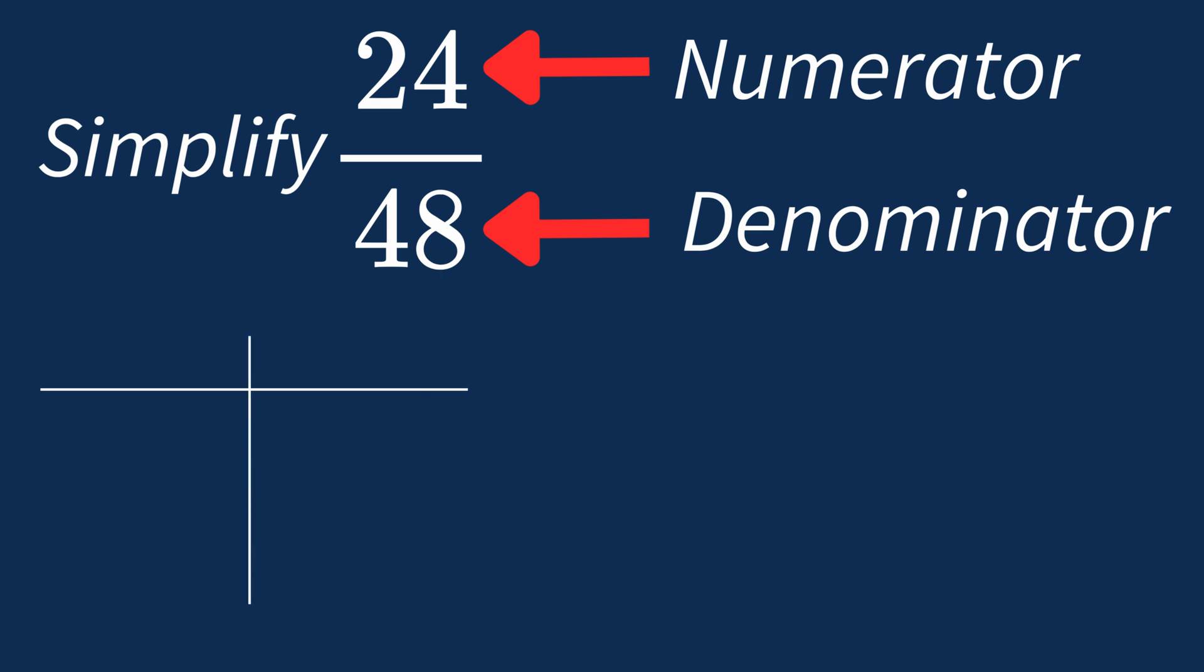First, let's list out the factors for each. For 24, the factors are 1, 2, 3, 4, 6, 8, 12, and 24.